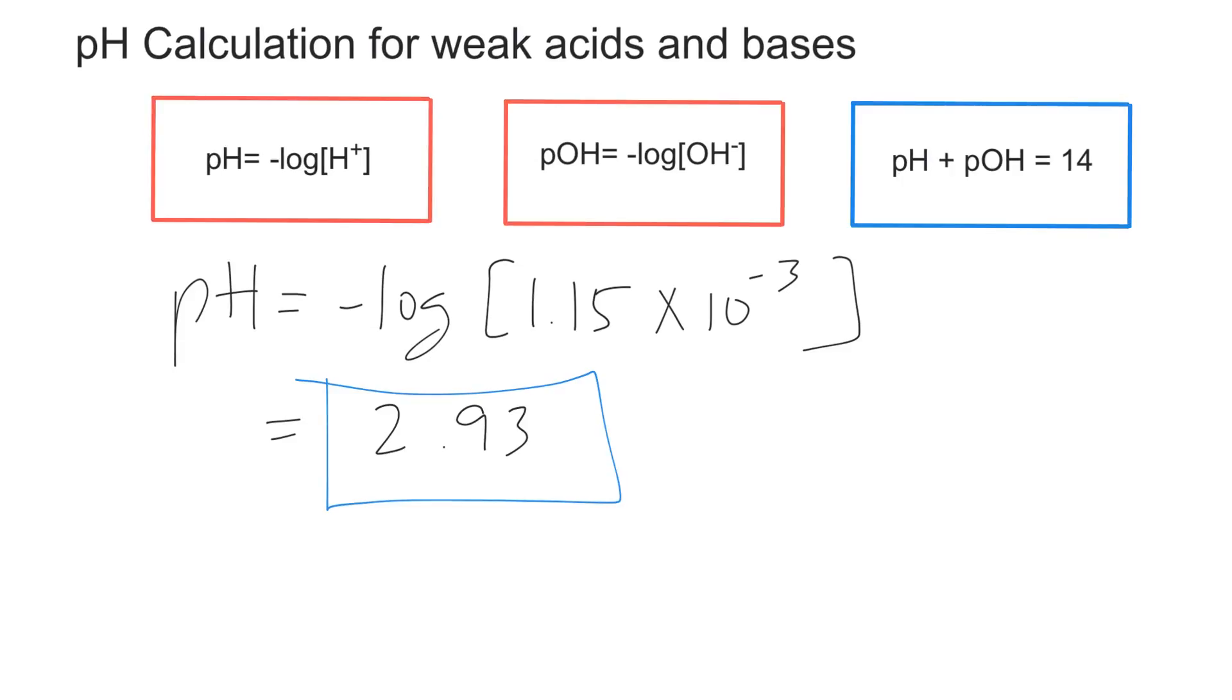Now, if you started with a weak base, the procedure would be pretty much the same. Let's say you have something like ammonia. You'll be given the Kb of ammonia. And using the ICE table, you'll be able to find the concentration that you need to plug in to find the pOH. And then you simply use the pH plus pOH is equal to 14 formula to determine the value of the pH. So it would just be one extra step that you need to do.